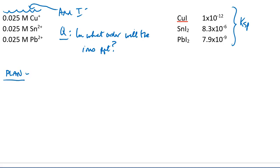Let's calculate the iodide concentration when each cation begins to precipitate. Why would that be useful? The cation that begins to precipitate at the lowest iodide concentration is the one to precipitate first. The cation that begins to precipitate at the highest iodide concentration precipitates last.